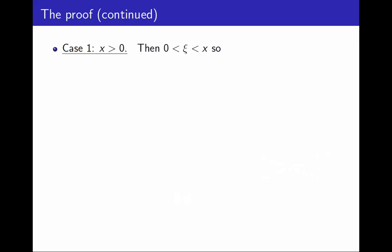So when x is greater than 0, xi is between 0 and x. And therefore, here is again the expression I have for the remainder: e to the xi, x to the n plus 1 over n plus 1 factorial.